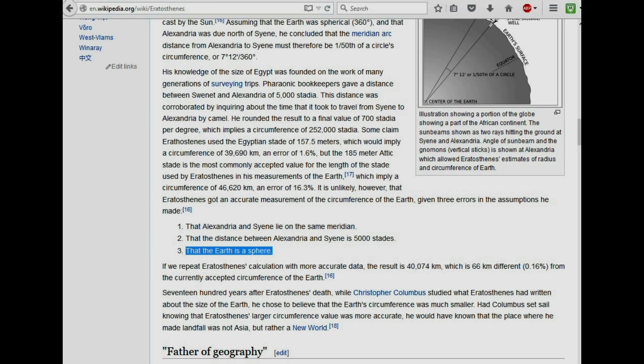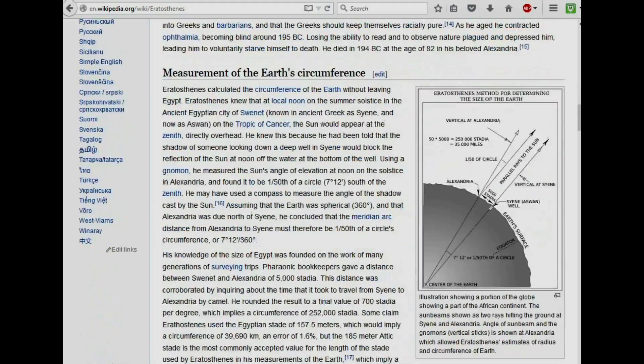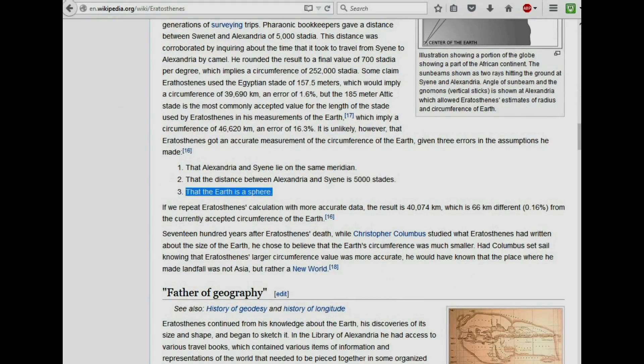But the biggest thing about Eratosthenes that I find very perplexing is that if we go down to the page here, he goes on the one main assumption, and that is the Earth is a sphere. Now that's just an assumption. He has no evidence or proof that the Earth is round. If you're living in Egypt about 200 years before Christ, I mean, I don't think you can get that much evidence together to indicate that the Earth is actually round. So it's just an assumption.